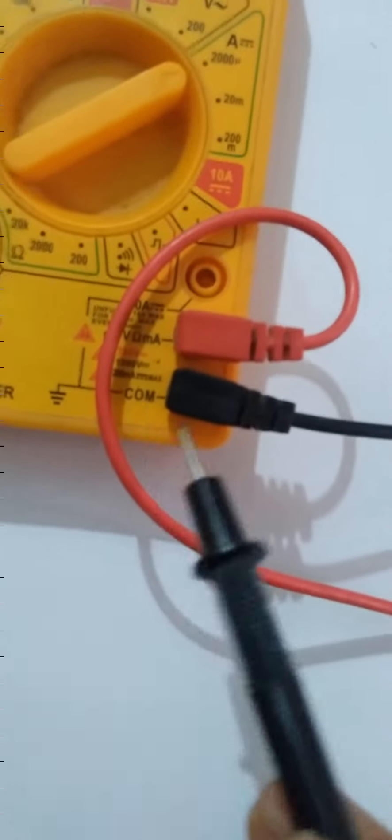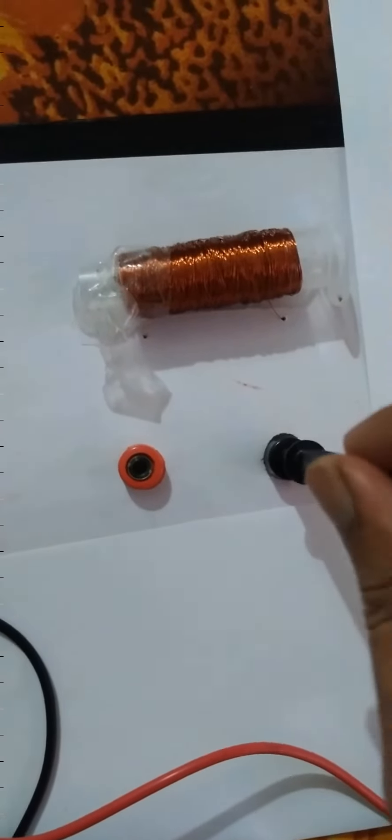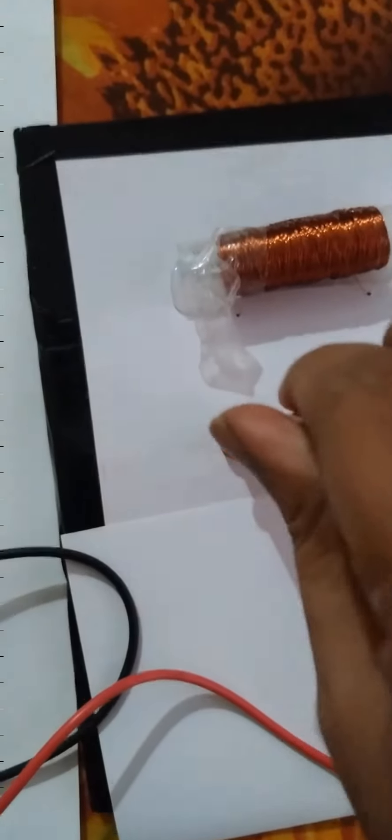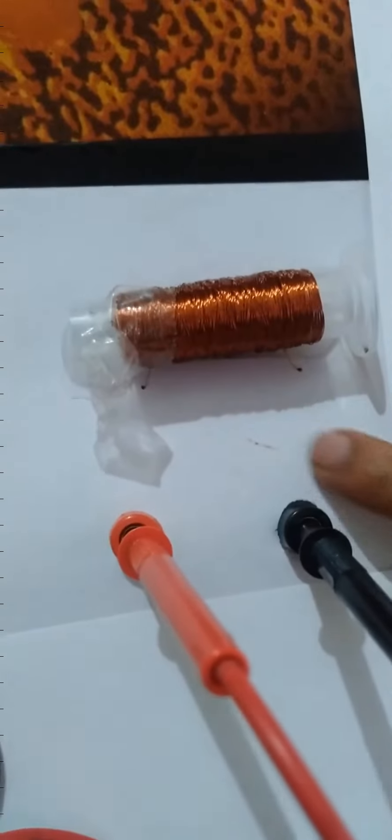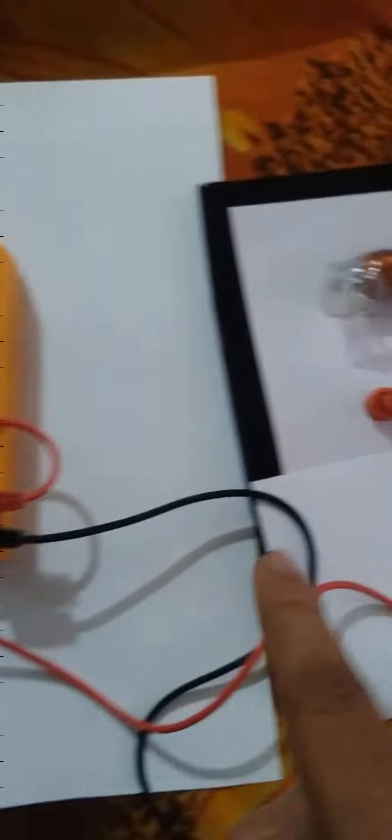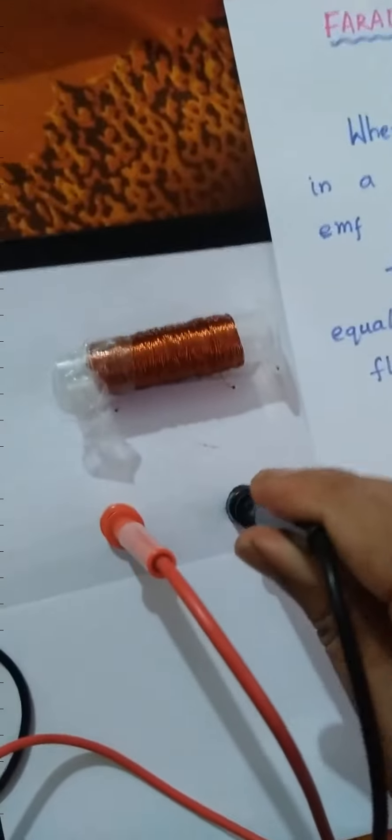Now these connectors - multimeter connectors. Common terminal, that means black terminal (C-O-M), is connected to one of the connectors. Similarly, another probe of multimeter is connected to the other connector. So the two ends of the coils are internally connected to the connectors, and multimeter probes are connected to these ends of the coils.